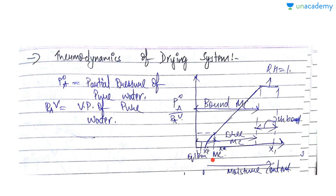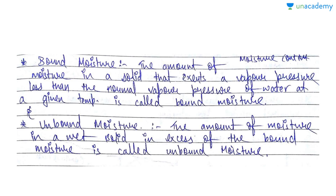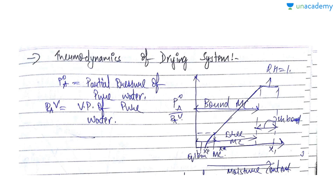Looking at the definitions: bound moisture is the amount of moisture content in a solid that exerts a vapor pressure less than the normal vapor pressure of water at a given temperature. Unbound moisture is the amount of moisture in a wet solid in excess of the bound moisture. We can see that bound moisture is present, and unbound moisture is in excess of bound moisture.